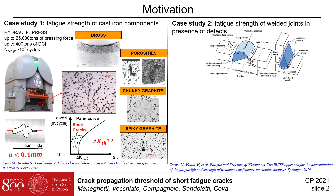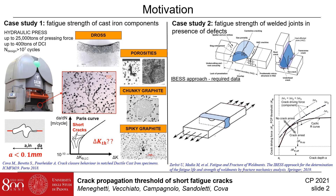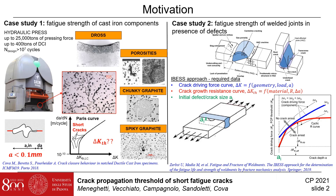According to the HIBESS approach developed by Zerbst and co-authors, the fatigue limit condition can be derived through a fracture mechanics approach, which requires the crack driving force, the material crack growth resistance as a function of the crack length, and the initial defect size. The fatigue limit condition occurs when the crack driving force curve is tangent to the crack growth resistance curve, i.e., the cyclic R-curve. In both case studies, it is fundamental to experimentally derive the crack propagation threshold of short fatigue cracks.